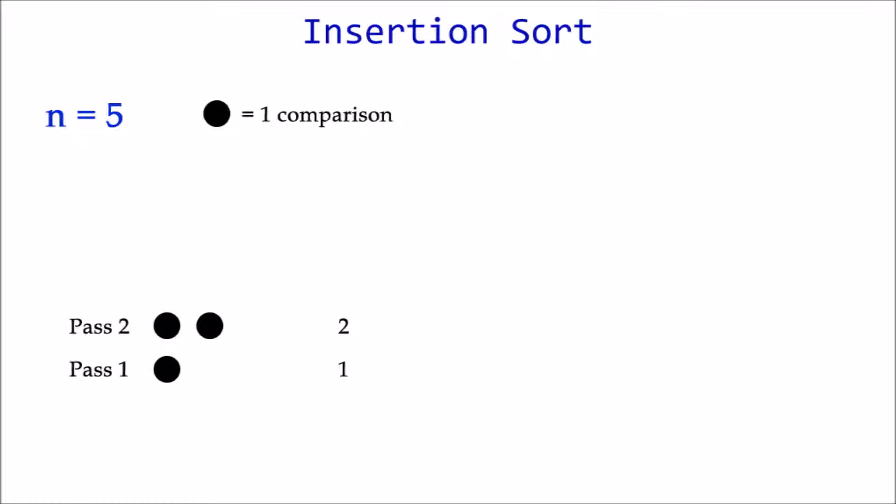Second pass, a max of two comparisons. Third pass, a max of three comparisons. And fourth pass, a max of four comparisons, or n minus 1.